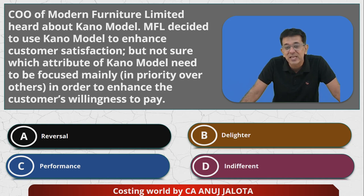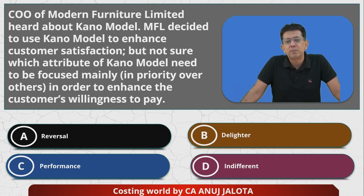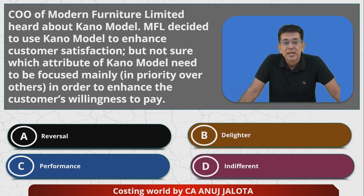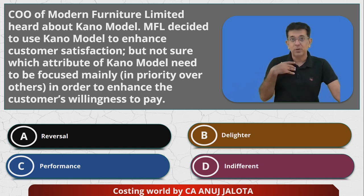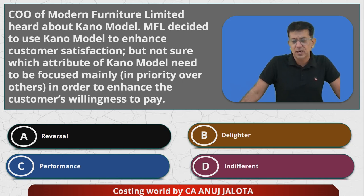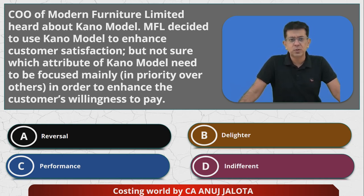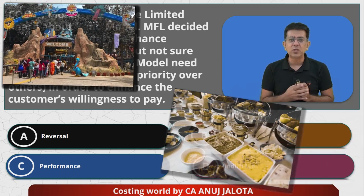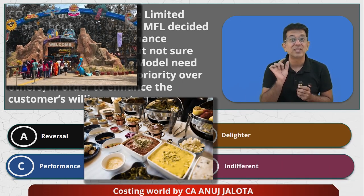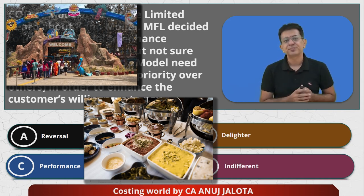Coming back to the question: which attribute enhances the consumer's willingness to pay? Not reversal — those features would stop the consumer from paying. Not delighter — those are extra happiness features, like when I take you out for a picnic or a five-star dinner. You didn't join for that, but if you get it you'll be super happy — that's a delighter.